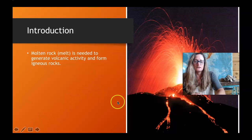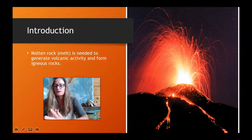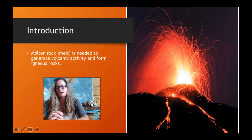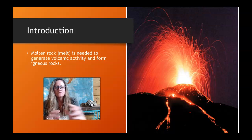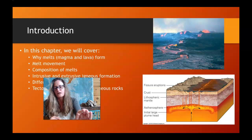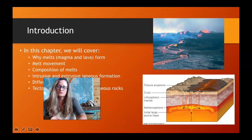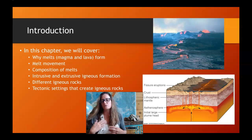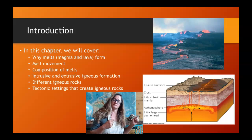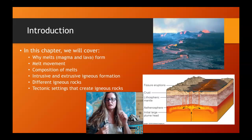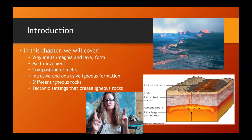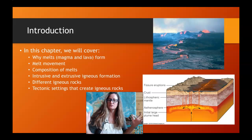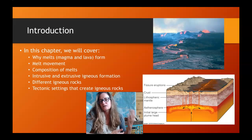We start with magma — molten rock, liquid rock — and we need to have volcanic activity or some kind of intrusive activity to generate an igneous rock. In this chapter we're going to cover why the earth melts. It doesn't just melt everywhere; it melts in certain conditions. We're going to talk about the movement of that melt, what the melt is made out of, and intrusive and extrusive igneous rocks — the two main classifications of igneous rocks. We'll look at different kinds of igneous rocks that form because of these different processes, and then think about how the tectonic setting can dictate what kind of igneous rock and igneous formations we have.